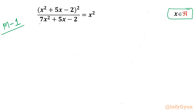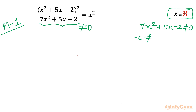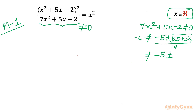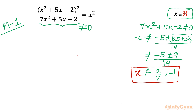Let me write Method 1 and begin by writing the domain of the equation. The denominator cannot be 0, so 7x² + 5x - 2 ≠ 0. Applying the Sridharacharya formula: x ≠ (-5 ± √81) / 14 = (-5 ± 9) / 14. Considering plus: 4/14 = 2/7. Considering minus: -14/14 = -1. So the exempted values are x = 2/7 and x = -1.